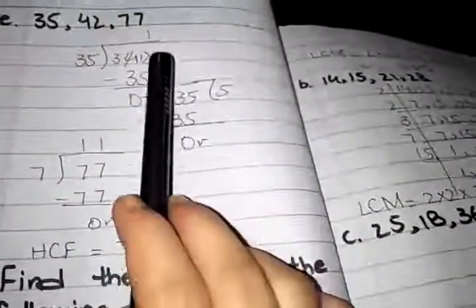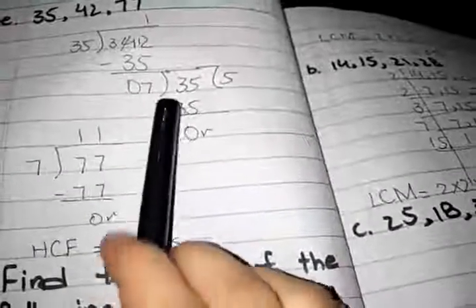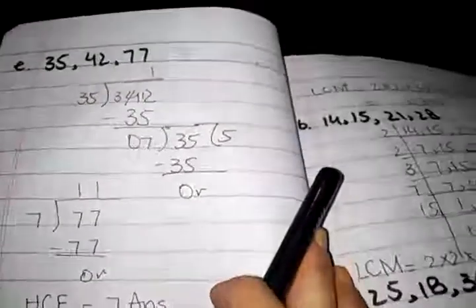Now we divide 7 on 77. So 7 is the highest common factor of 35, 42, and 77.